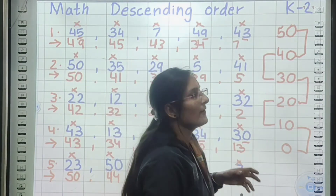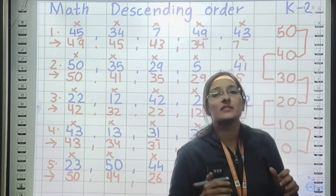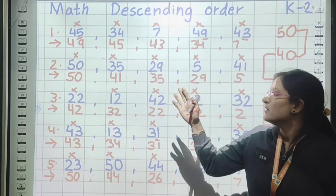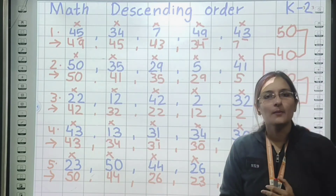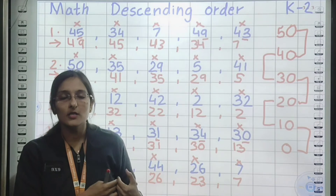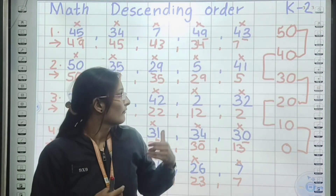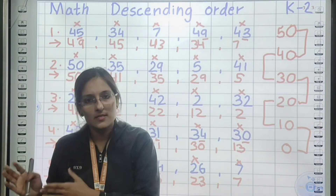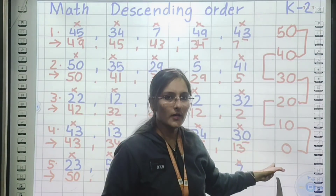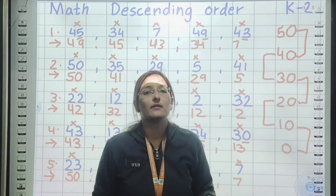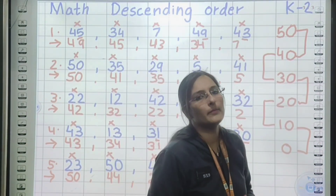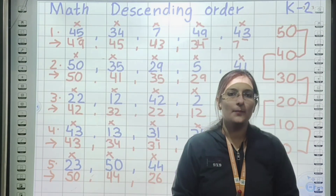So students, you have to do practice of numbers up to 50. The numbers can be changed, but the method and rules we are applying to solve these questions will remain the same. You have to go through backward counting and write numbers from biggest to smallest. Do practice of this in your notebook. We will meet soon again. Till then, take care. Bye.